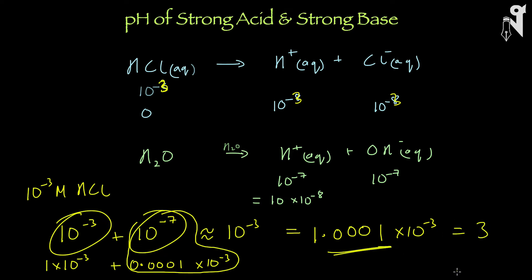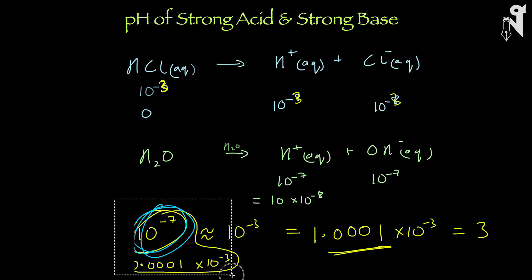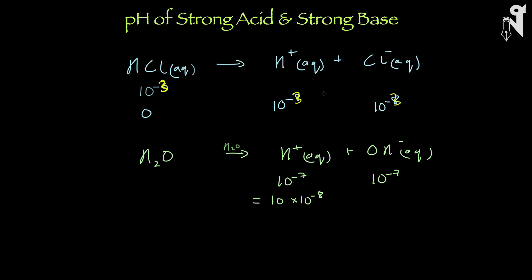So let us get back to solving the problem at hand — HCl at 10 to the power minus 8 molar. The H⁺ concentration in the solution is not 10 to the power minus 8 alone. It is a value which is greater than 10 to the power minus 7, because the pH has to come less than 7, we know for sure. And it is greater than 10 to the power minus 7 because water is also contributing.